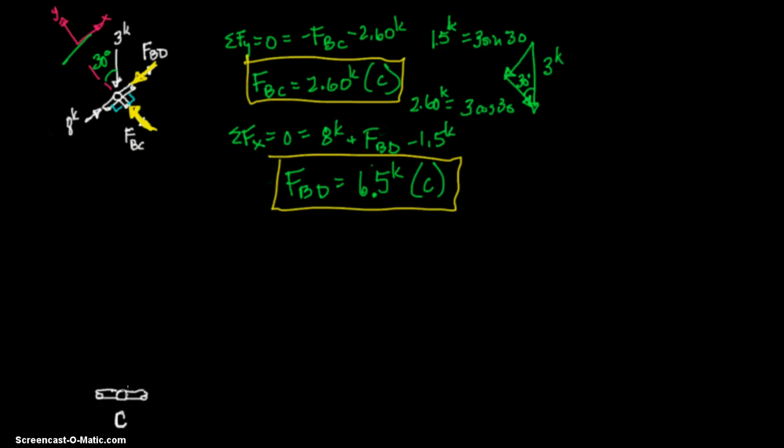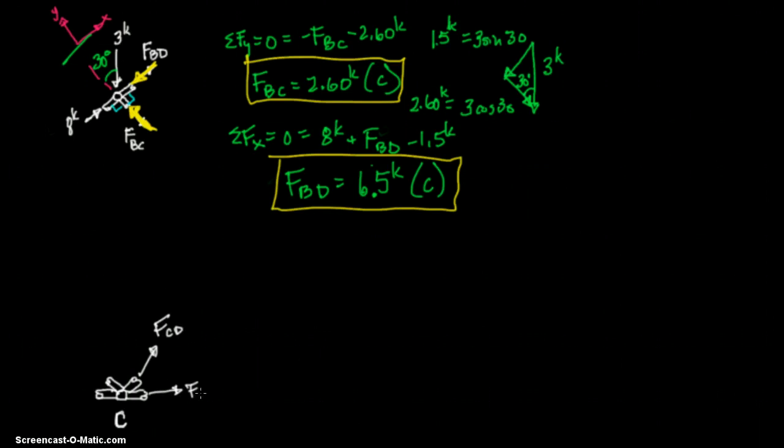Here is joint C. We have something coming up right here. And we have something coming up right there. It probably behooved me to draw this a little bit larger, but for right now, that'll work. We have FCD. We have FCE. Once again, I'm assuming they're coming out, their intention, even though I may know otherwise. 2.6 kips and 6.93 kips.